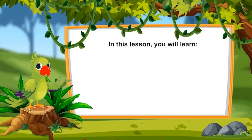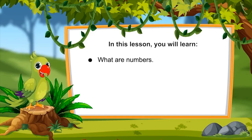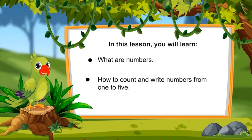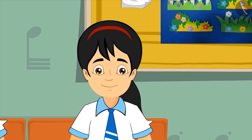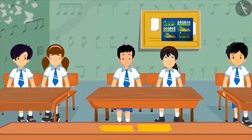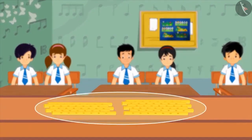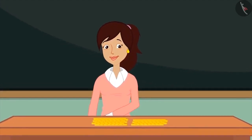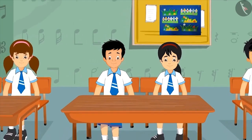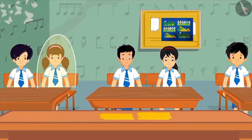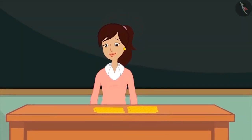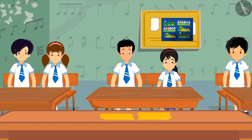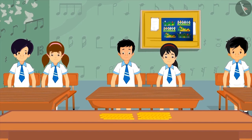Let us see what you will learn from this lesson. What are numbers? And how to count and write numbers from one to five? Today, Pinky and her friends have their first music class. In the class, many flutes are placed on the table. The teacher has to give a flute to each child, but for this, she should know how many children are there in the class. To find out the number of children in the class, she makes the children stand in a row and starts counting them one by one.